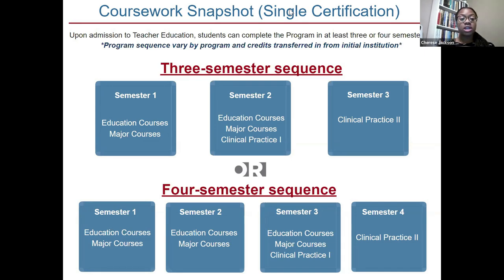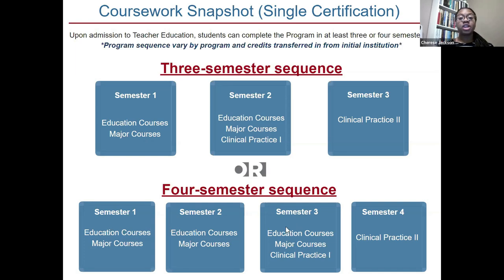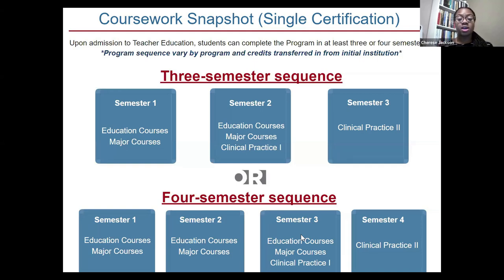In the four-semester sequence, the only difference is that in my third semester, instead of jumping straight into clinical practice two, I would still be finishing up my major coursework. So semesters one and two are major coursework and education courses; semester three finishes major coursework, education courses, and starts clinical practice one; and semester four is completing clinical practice two. If you'd like to reference this, feel free to take a screenshot.